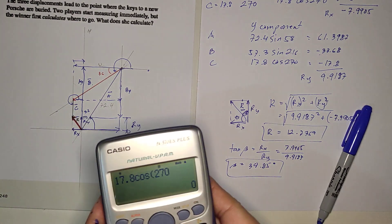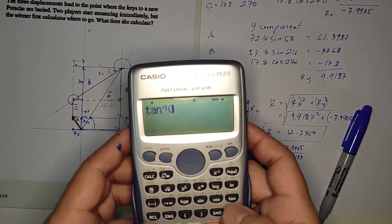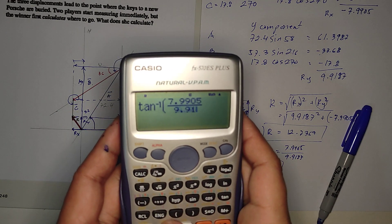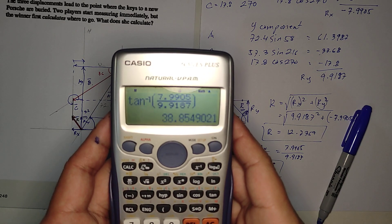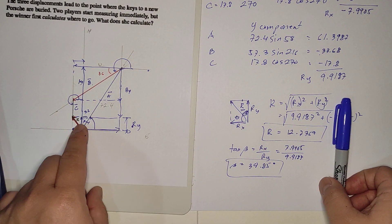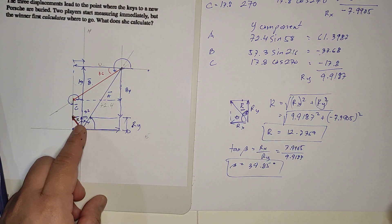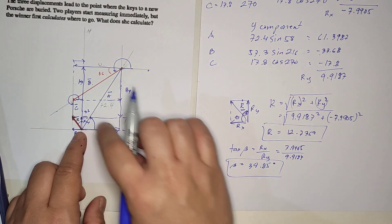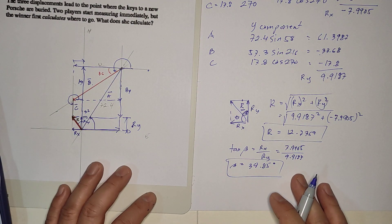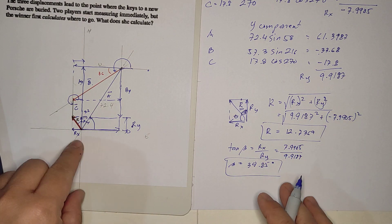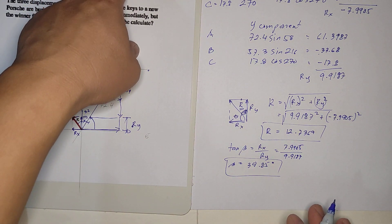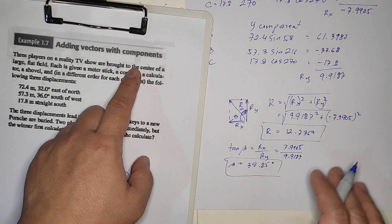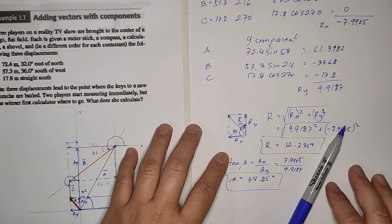So the angle is 38.85 degrees. The point is, you can easily identify the resultant by using the component method — computing the x and y components of each vector, summing them to get Rx and Ry, and then applying the Pythagorean theorem. See you in the next video.